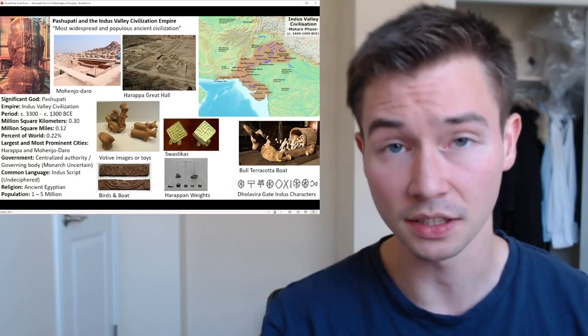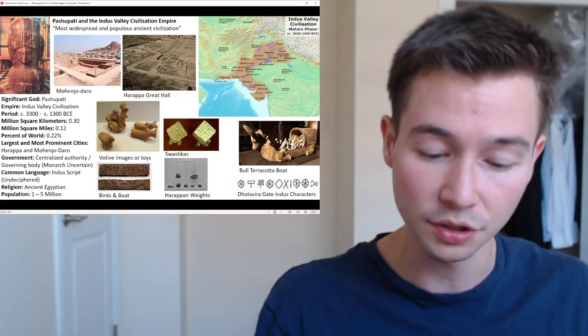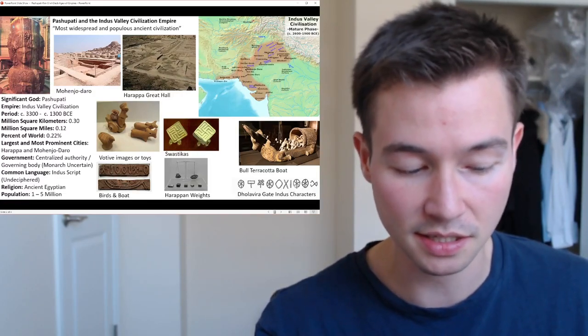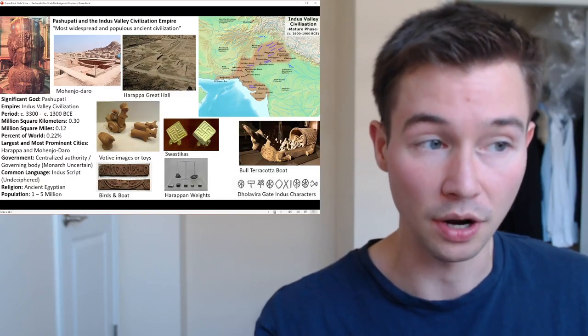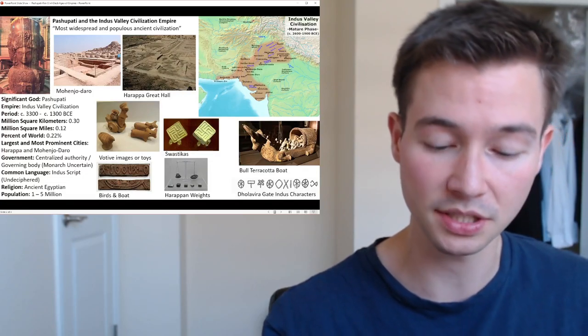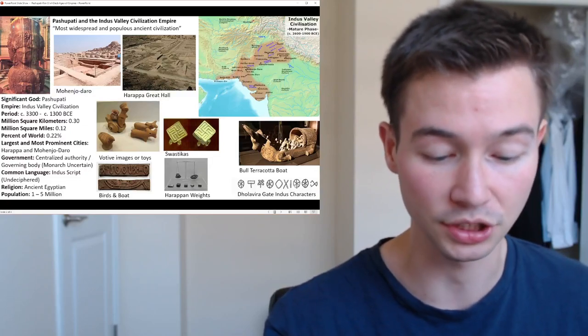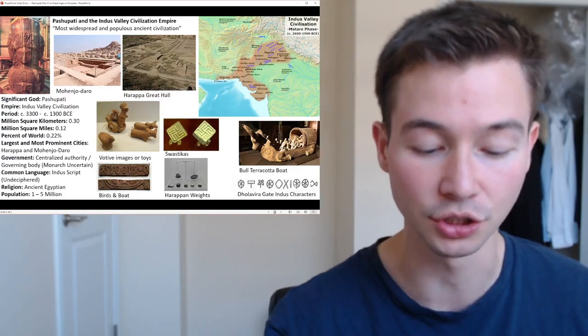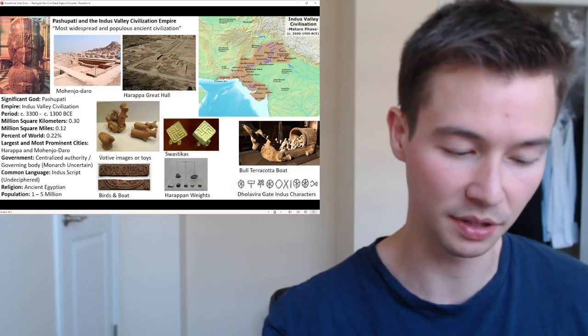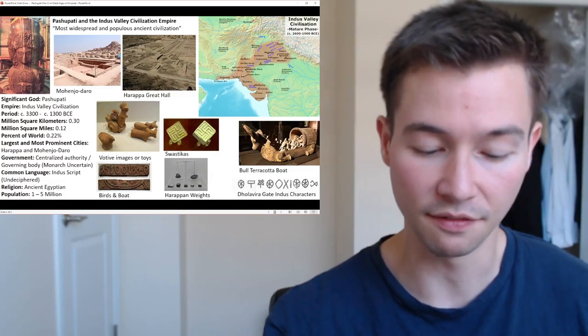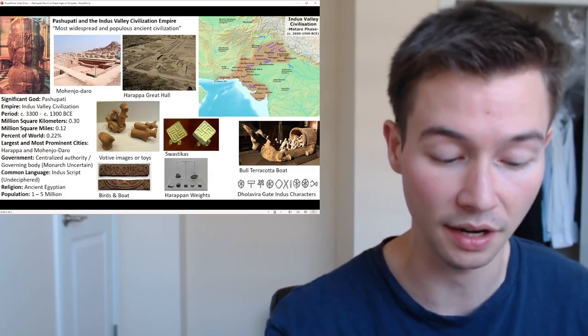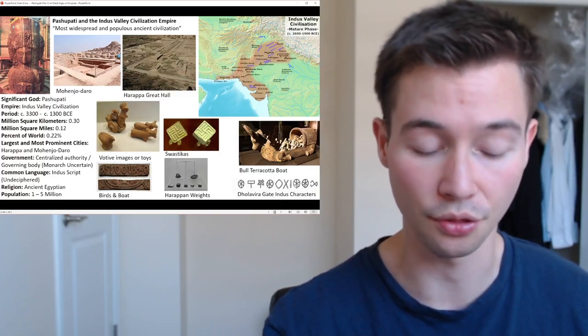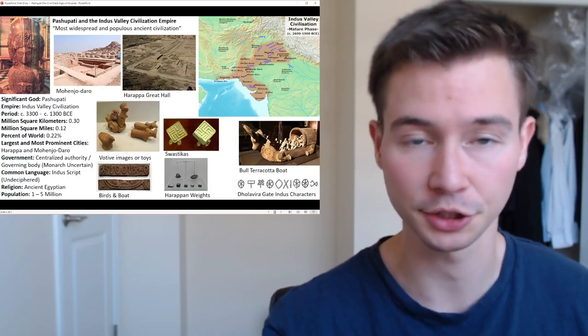The roots of the Indus Valley Civilization can be traced back to the fertile plains of the Indus River, where agricultural communities thrived. Around 3,300 BCE, these scattered settlements coalesced into organized urban centers. These early urban centers displayed signs of sophisticated social structure with evidence of central authority, trade networks, and a system of weights and measures.